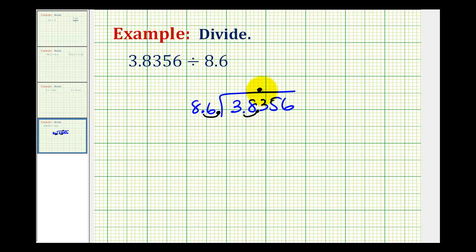Now that we have the decimal in the correct position, we can go ahead and ignore the decimal points and perform long division as we normally would. So we look at this as 86 and look at this as 38,356 with the decimal point right here.